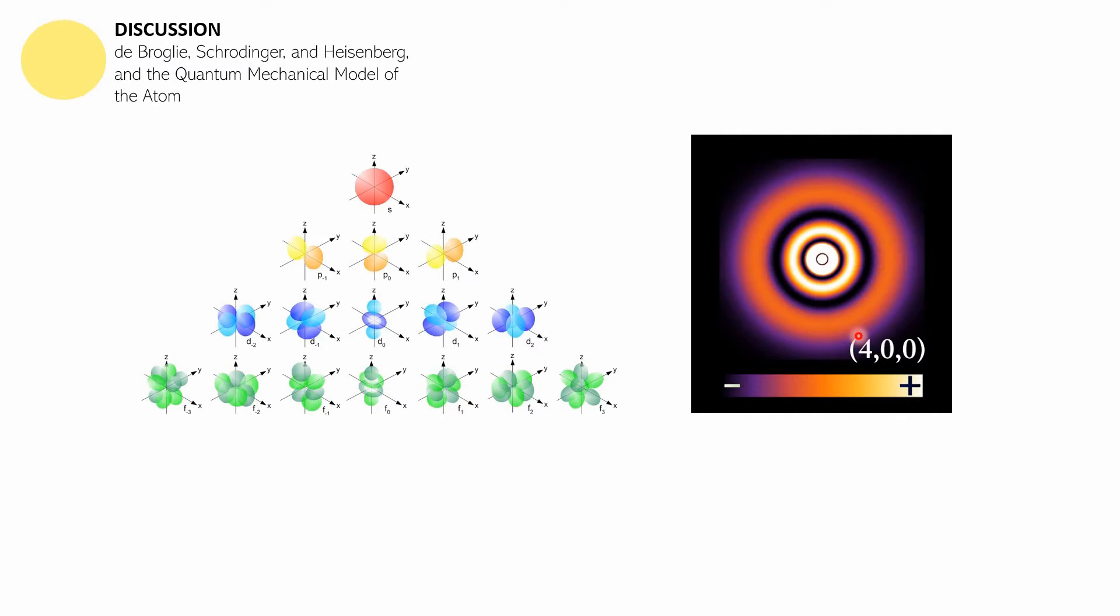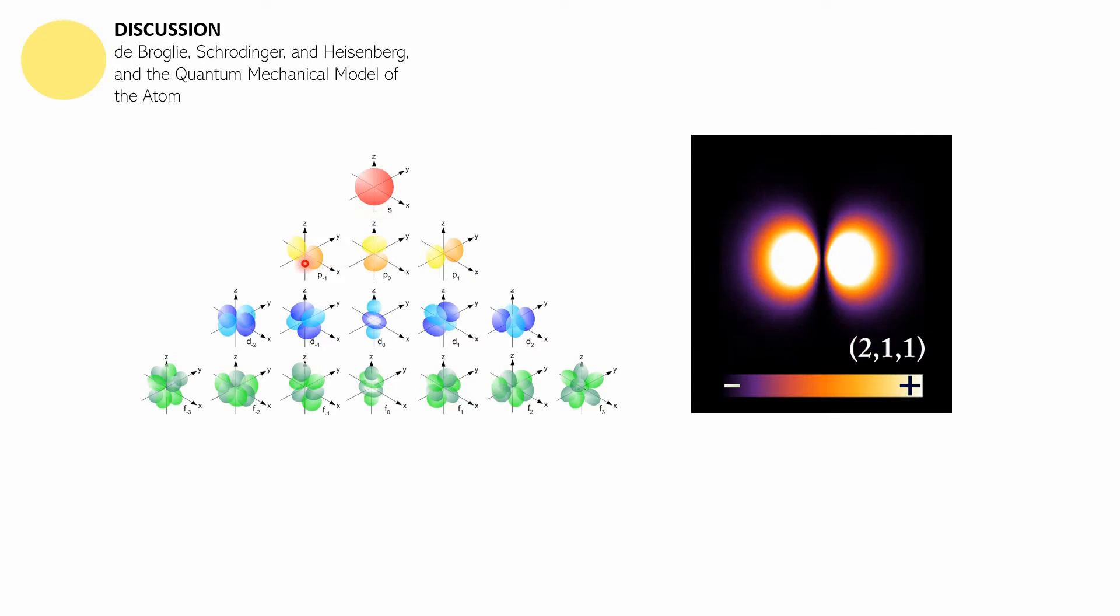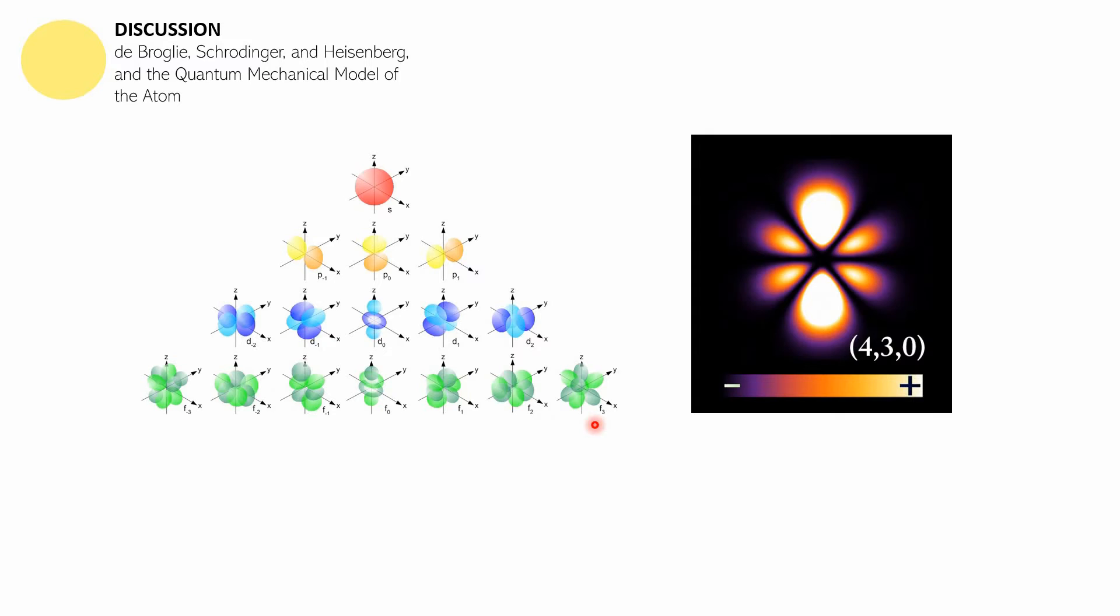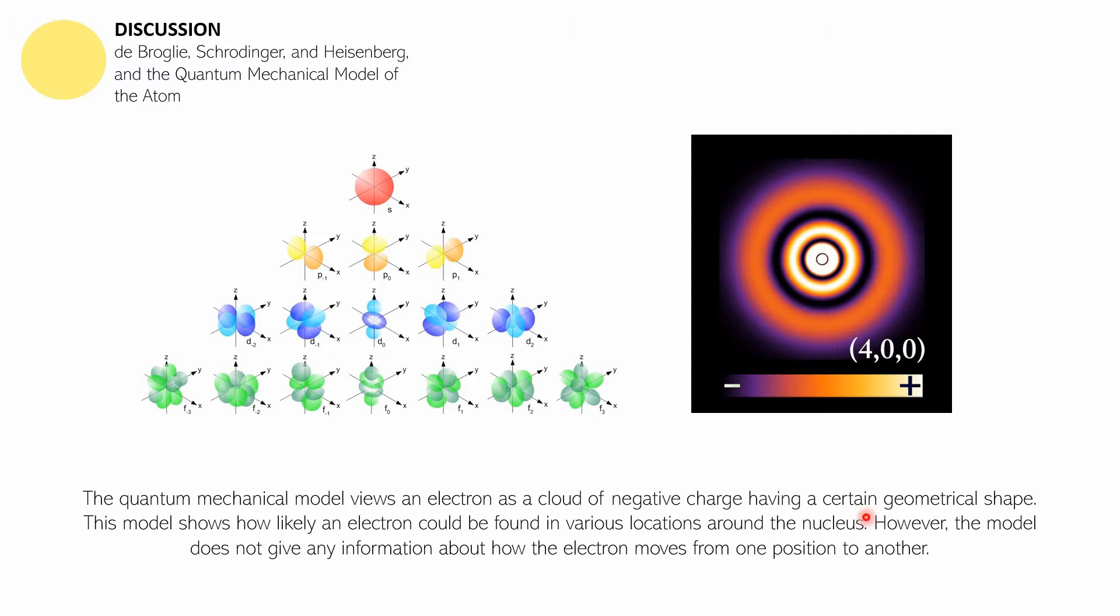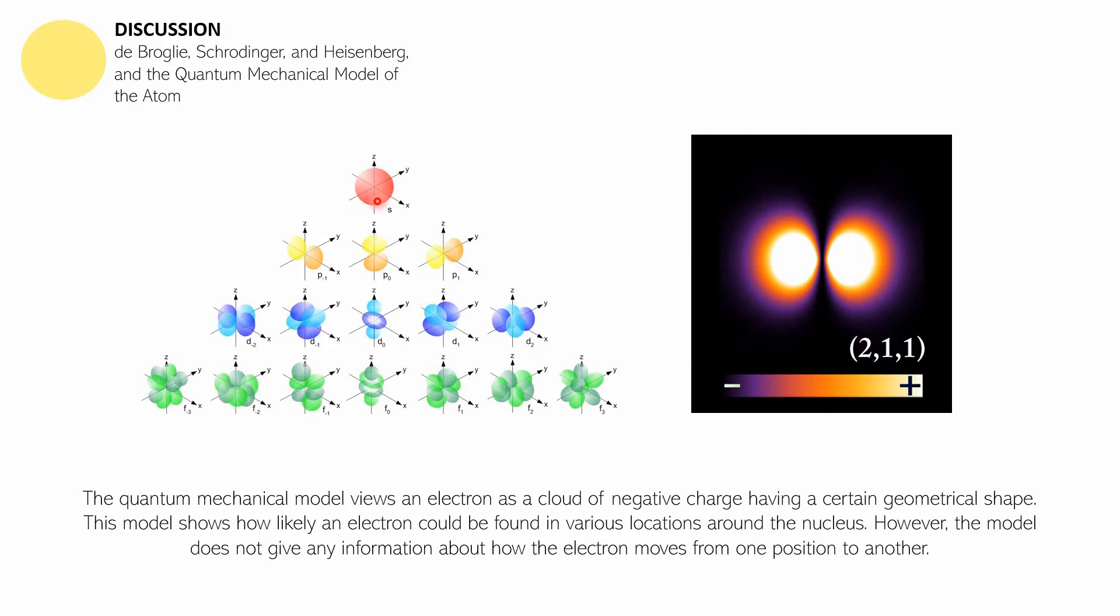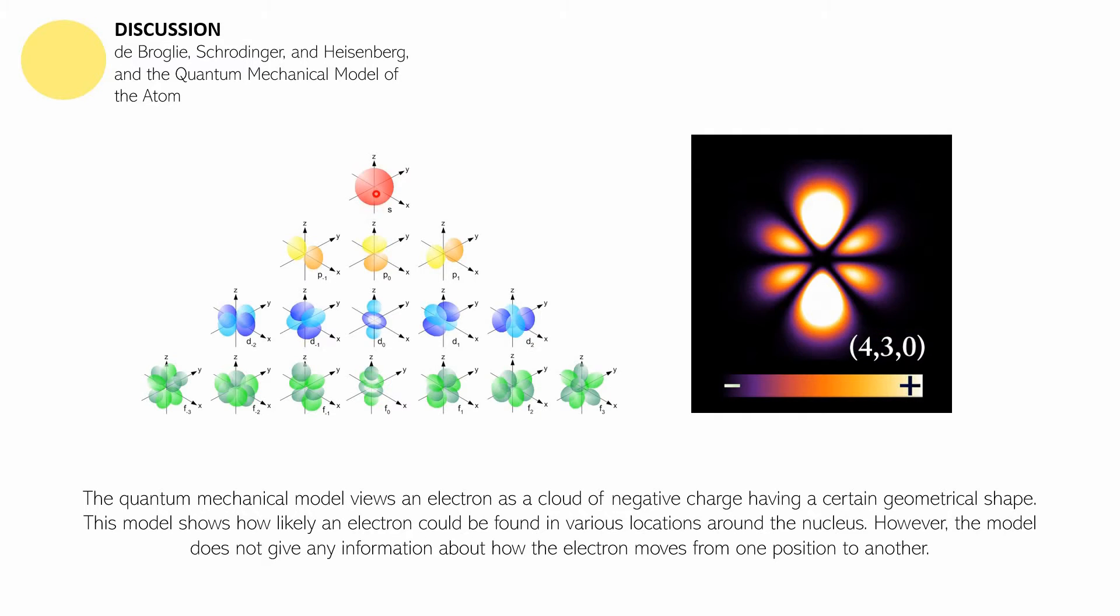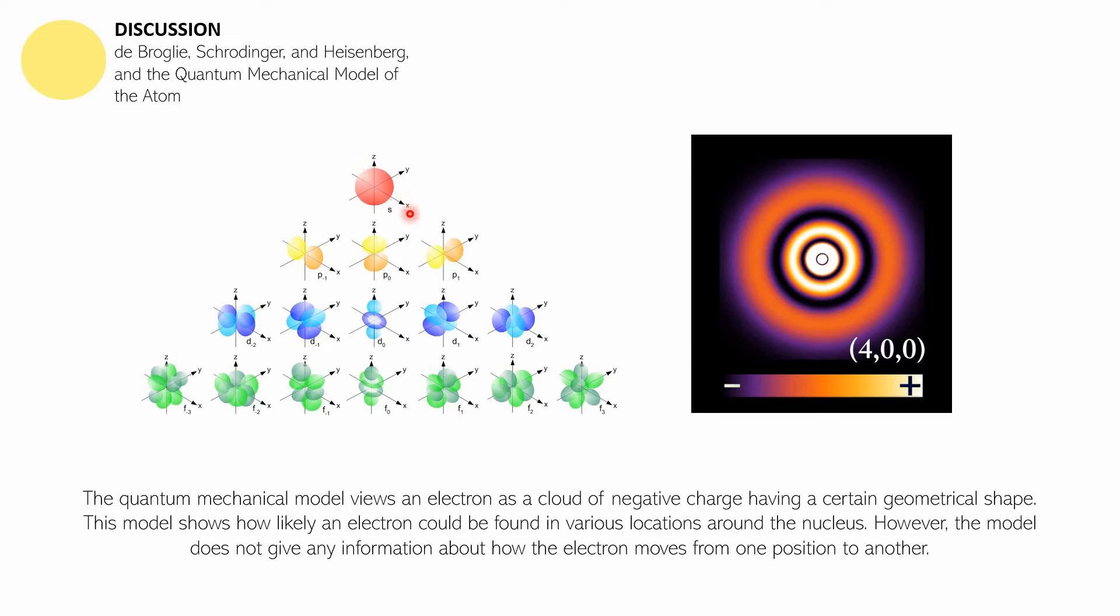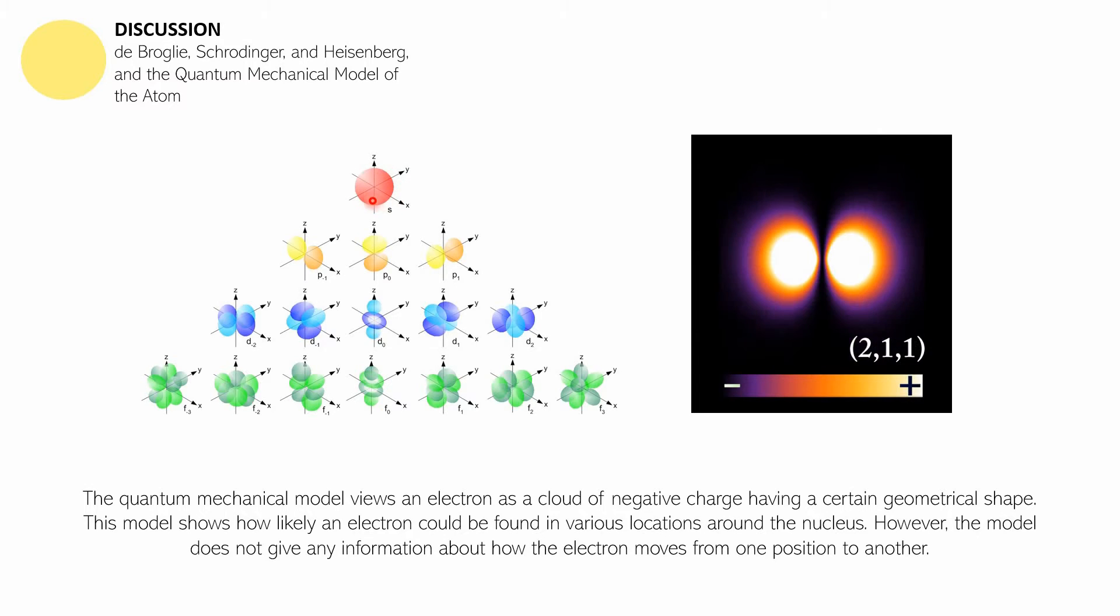These are the different orbitals for the different sublevels. We have the s orbital to be spherical, and then p looks like a dumbbell. As we get to d and f, that dumbbell becomes more complicated. The quantum mechanical model views an electron as a cloud of negative charge having a certain geometrical shape. The s orbital is spherical, so if the nucleus is at the center of the sphere, it doesn't matter which direction you're looking—in any direction it's going to be just a uniform space between the nucleus and the end of the orbital.